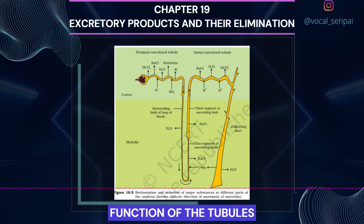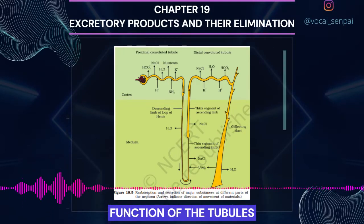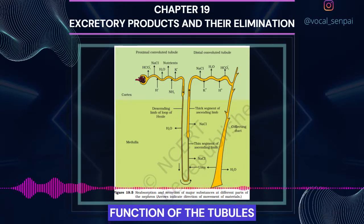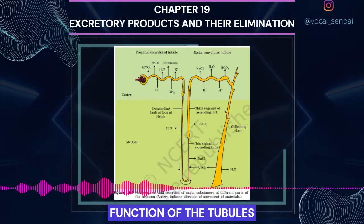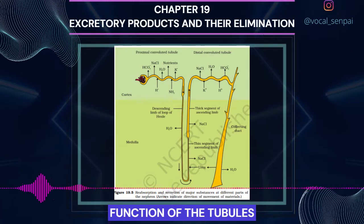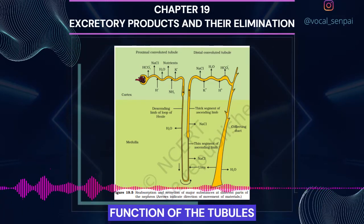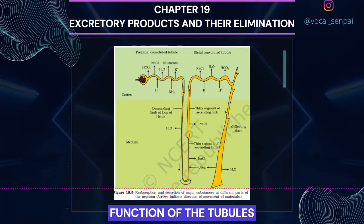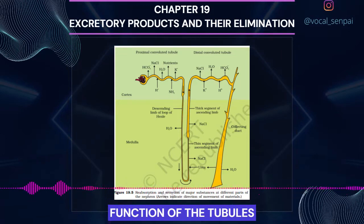Henle's Loop. Reabsorption is minimum in its ascending limb. However, this region plays a significant role in the maintenance of high osmolarity of medullary interstitial fluid. The descending limb of loop of Henle is permeable to water but almost impermeable to electrolytes — this concentrates the filtrate as it moves down. The ascending limb is impermeable to water but allows transport of electrolytes actively or passively. Therefore, as the concentrated filtrate passes upward, it gets diluted due to the passage of electrolytes to the medullary fluid.